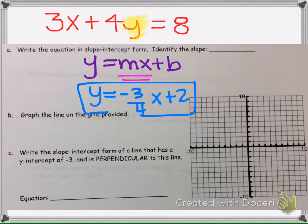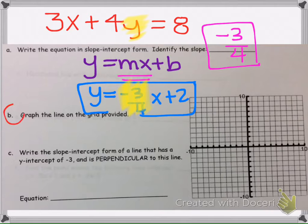So it asks to write the equation in slope-intercept form, which we just did, and then it asks us also to identify the slope. The slope is just the number in front of the x, so we would write negative 3 fourths here. All right, next, part B says to graph the line on the grid.